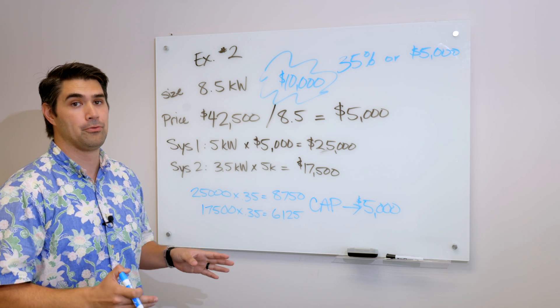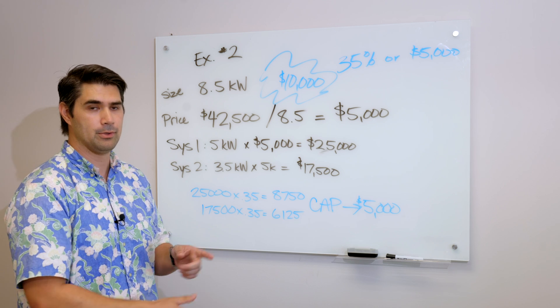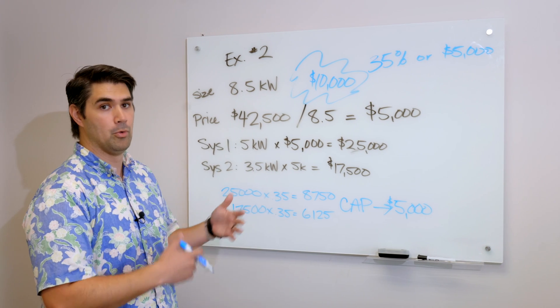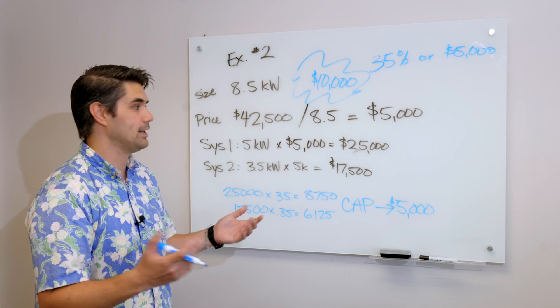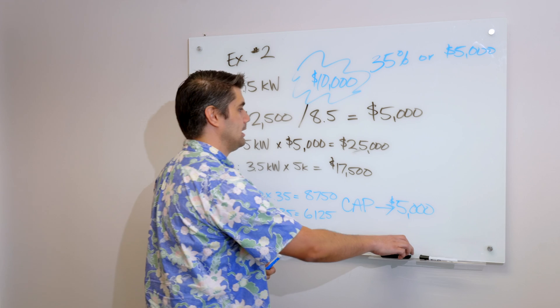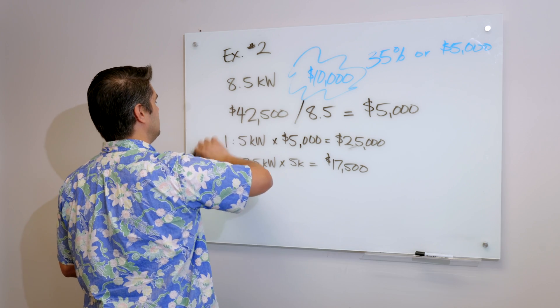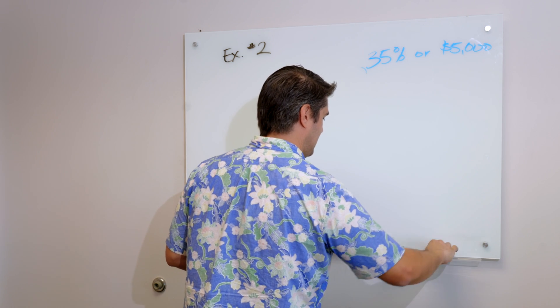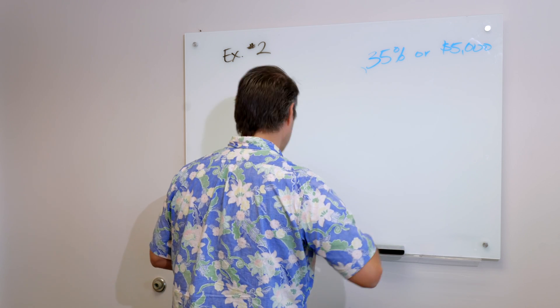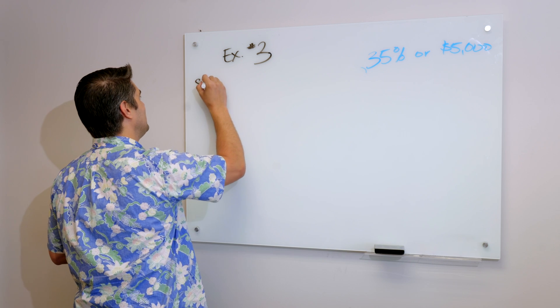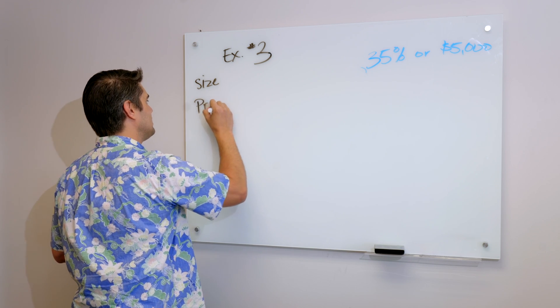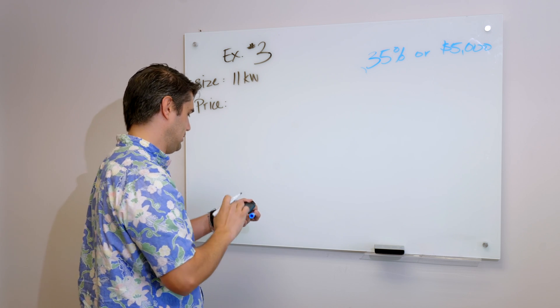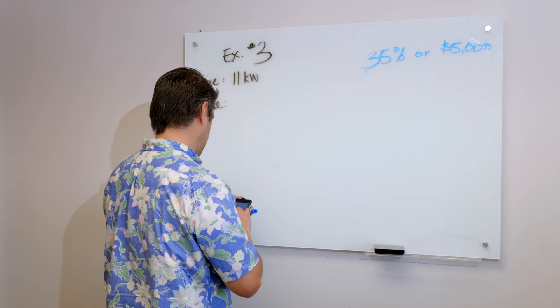So this system is eligible for a full $10,000 as our state tax credit. Now let's get into example 3. And I think it's important to understand example 1, which is a simple system, it's 5K or less. Example 2, where it's more than one system. And then system 3. This is going to be example number 3. System size, price. So let's say this is 11 kilowatts, which is about 28 to 30 panels. And the price is $55,000.